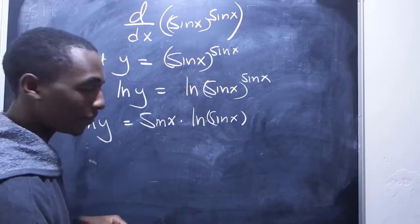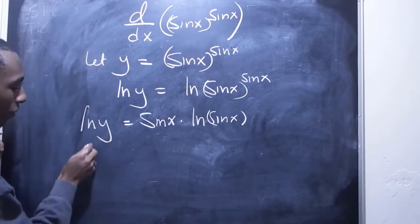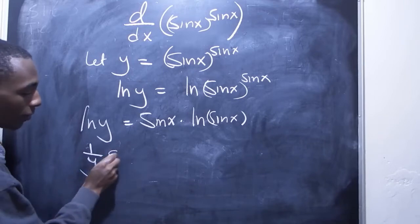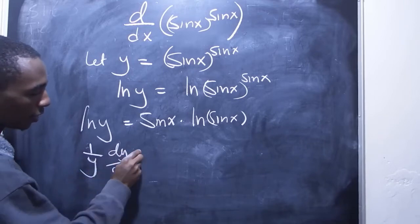And now we can start the differentiation. So I'll take the derivative of this. I have 1 over y times dy dx.